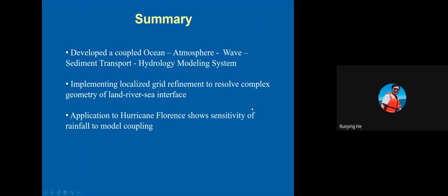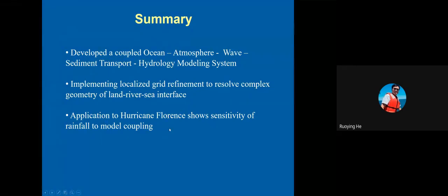In summary, our team is developing a coupled ocean-atmosphere-wave-sediment transport and hydrology prediction system — a localized unified prediction system for coastal and continental shelf scales, implementing localized grid refinements to resolve complex land-river-sea interface geometry, applied to Hurricane Florence to show the sensitivities of rainfall to model coupling. Thank you.